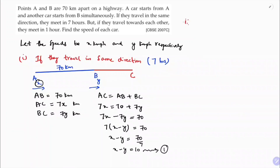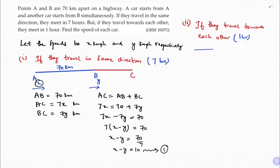Case 2: if they travel towards each other, they will meet in 1 hour. Points A and B are at 70 km apart. Speed of car A is x, car B is y. They travel in opposite directions towards each other and will meet at a point D.